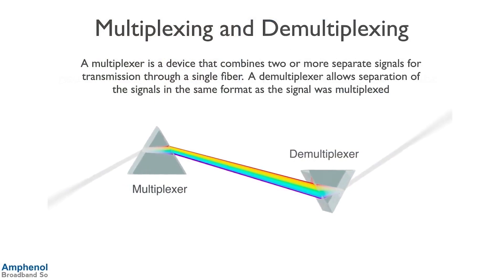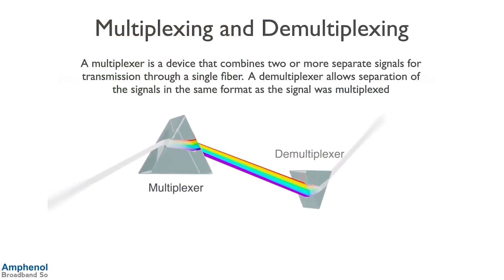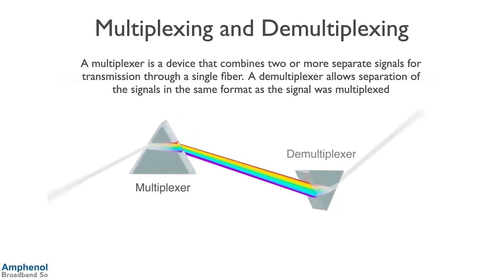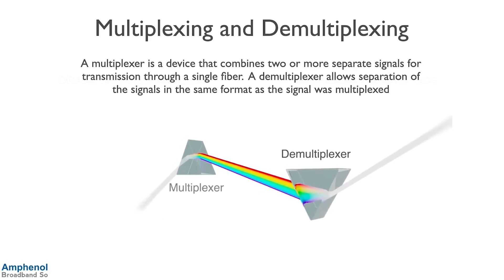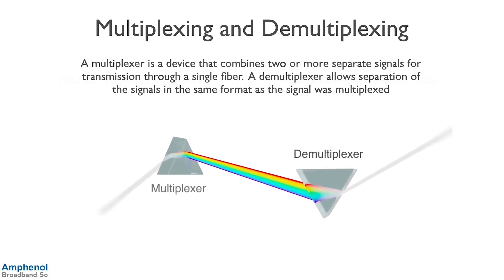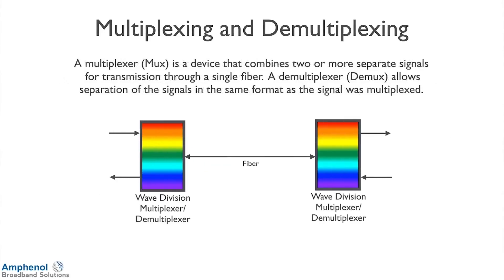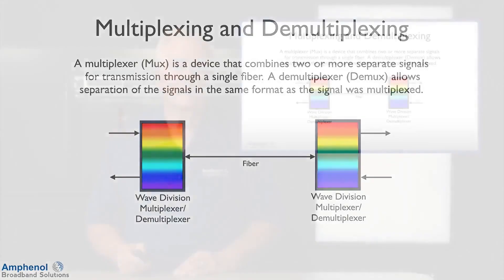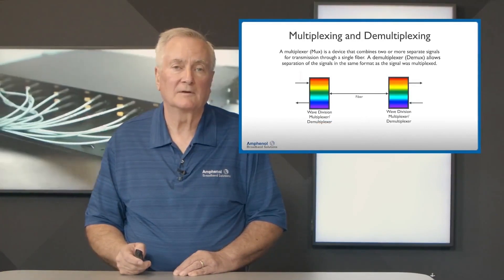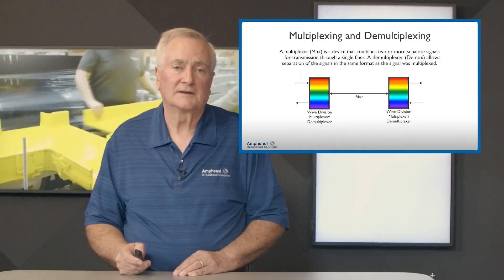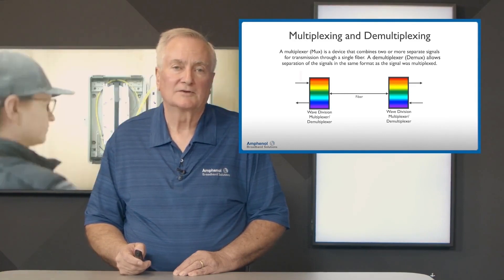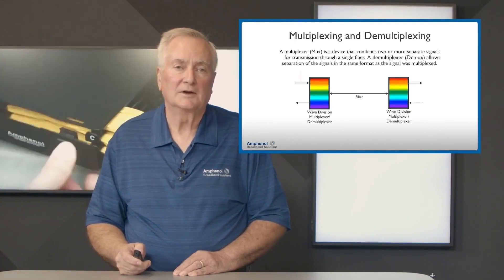Next we're going to look at multiplexers and demultiplexers. A multiplexer is a device that combines two or more separate signals for transmission through a single fiber. A demultiplexer allows separation of the signals in the same format as they were multiplexed. When fiber was first used, we'd take a separate fiber for the forward and a separate fiber for the return — not very effective. To be more efficient and cost effective with today's technology, we use multiplexing.